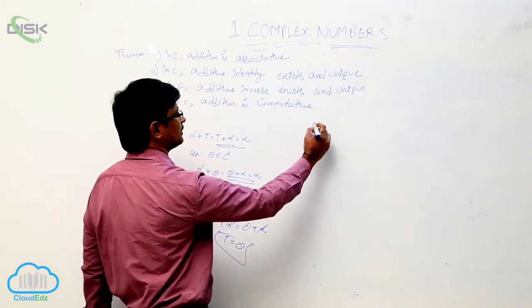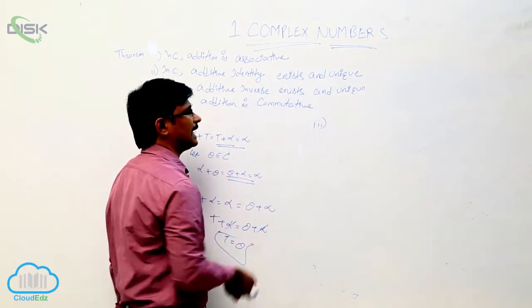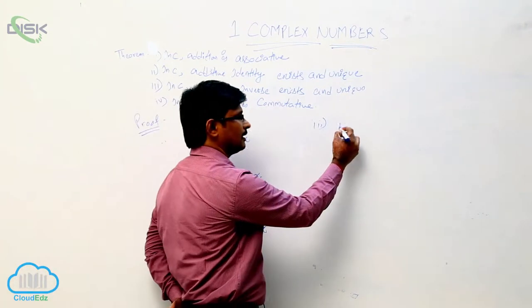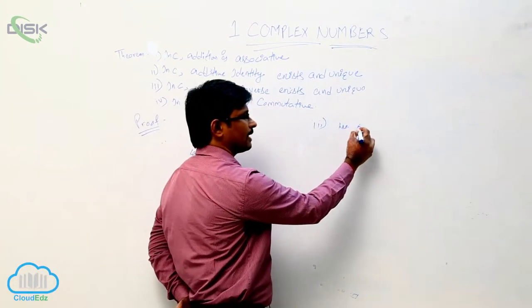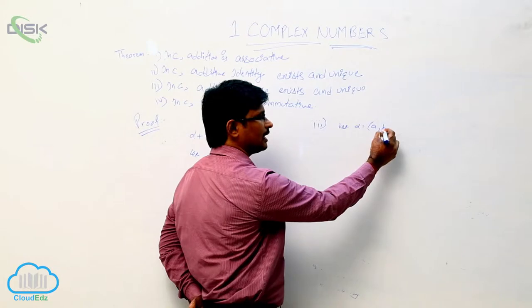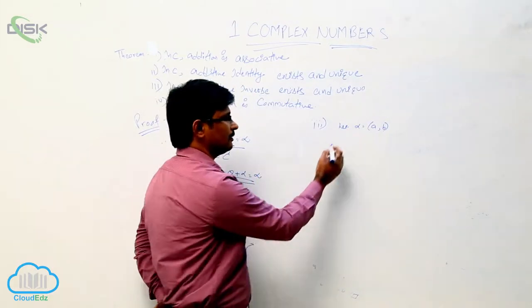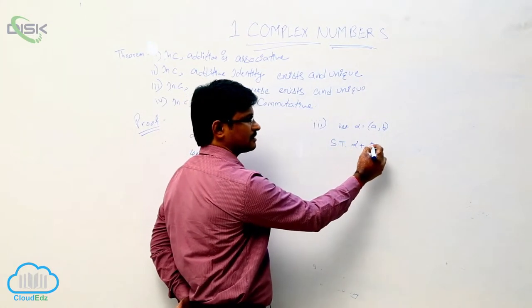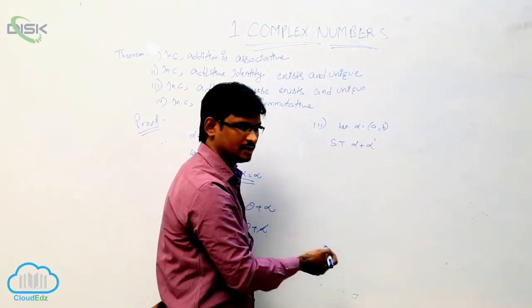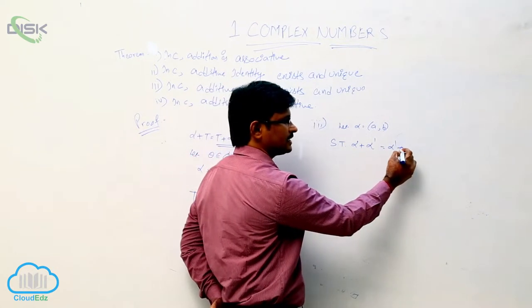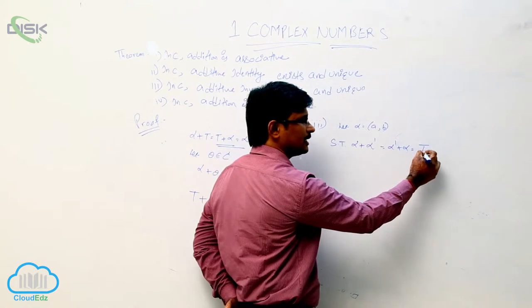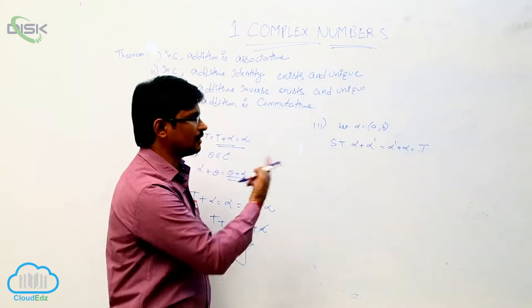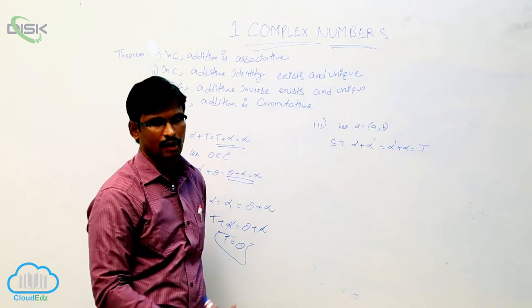Now we will see the third property: an additive inverse exists and is unique. Let alpha equal to (a, b). If we show that alpha plus alpha_dash equal to alpha_dash plus alpha equal to the additive identity, then alpha_dash is called the additive inverse of alpha.